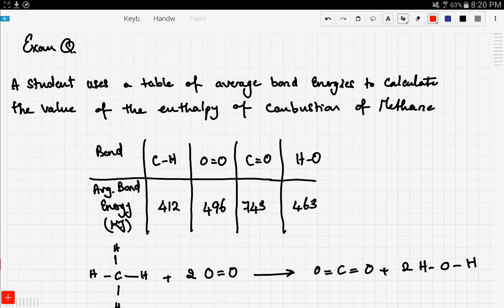It says here, a student uses a table of average bond energies to calculate the value of the enthalpy of combustion of methane. Well, the enthalpy of combustion is basically the delta H, okay?